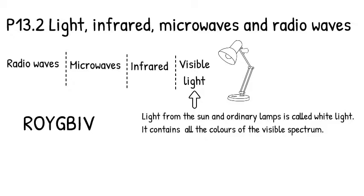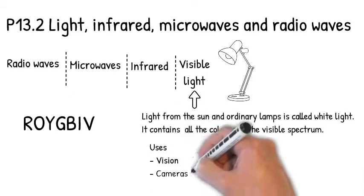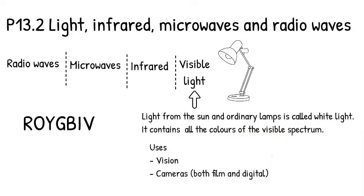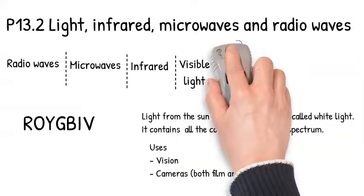This means red, orange, yellow, green, blue, indigo, and violet. Uses of the visible part of the spectrum include vision and cameras, both digital and the old-fashioned film style.